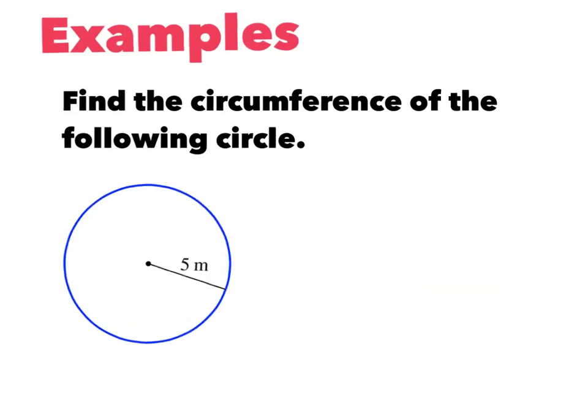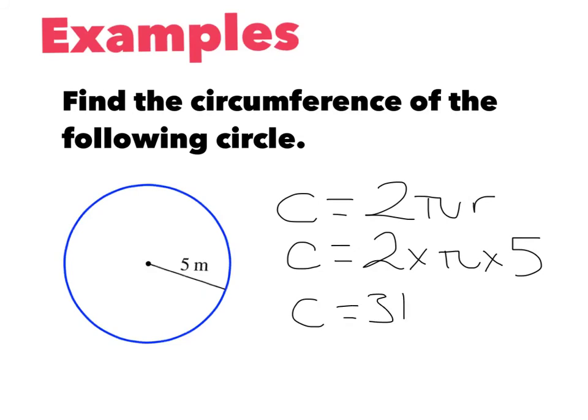Okay, this time, I don't have a diameter. In this case, I have the radius, so I use the formula circumference equals 2 pi r. I know that's the formula that I use. Now, I simply substitute that into the formula 2 multiplied by pi multiplied by the radius, which is 5. And then when I plug that into my calculator, I get an answer of 31.41592.